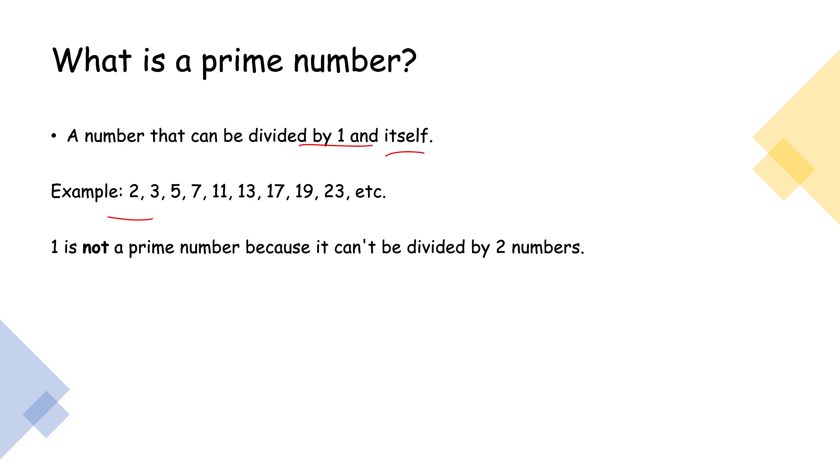3, 3 can be divided by itself and 1, 5, 7, 11, 13, 17, 19, 23, etc. So they all can be divided by 2 numbers. 1, why didn't I mention 1? 1 is not a prime number, yes, you heard me right. It's not a prime number because it can't be divided by 2 numbers. But you'll know why I told you that 1 is not a prime number soon.